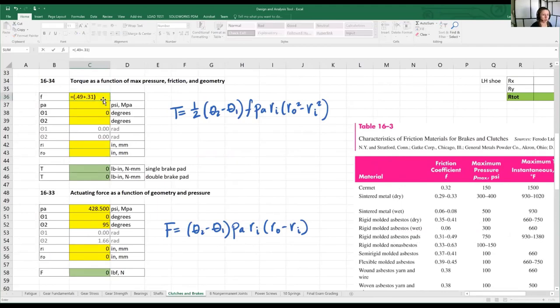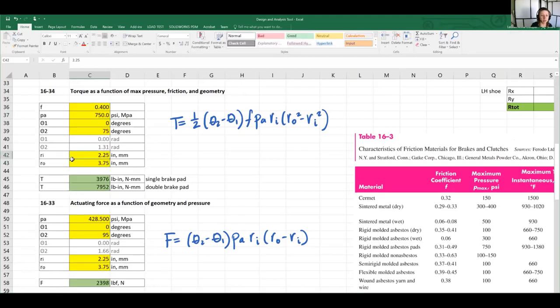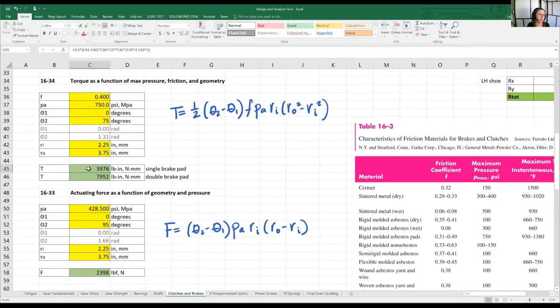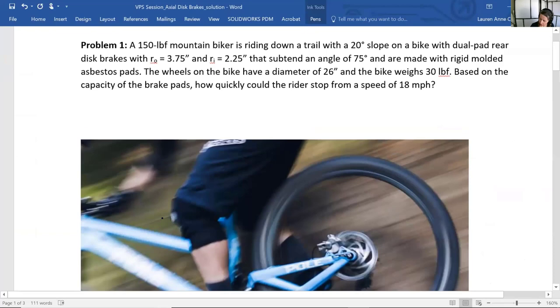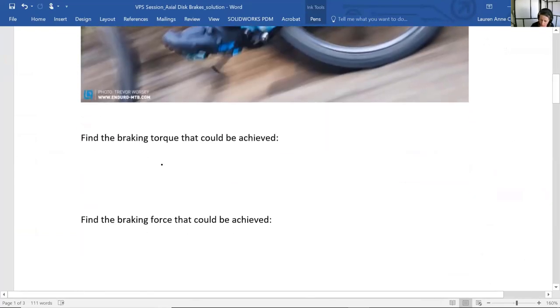Maximum pressure is pretty high at 750 psi, with a coefficient of friction between 0.31 and 0.49. We'll take the middle of the range: (0.49 + 0.31) / 2 = 0.4. Our dimensions are 2.25 inches inner radius and 3.75 inches outer radius. If we only had one pad, we could generate 3,976 pound-inches at maximum pressure. But we have two pads squeezing against the rotor, so that doubles our torque capacity to 7,952 pound-inches.